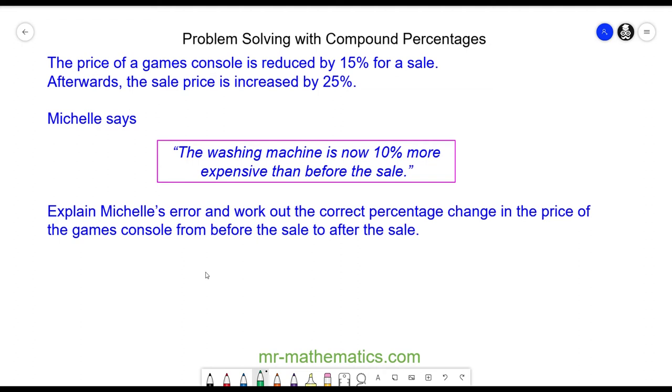So the price of a game console is reduced by 15% in a sale. Afterwards the sale price is increased by 25%. And Michelle says the washing machine is now 10% more expensive than before the sale.